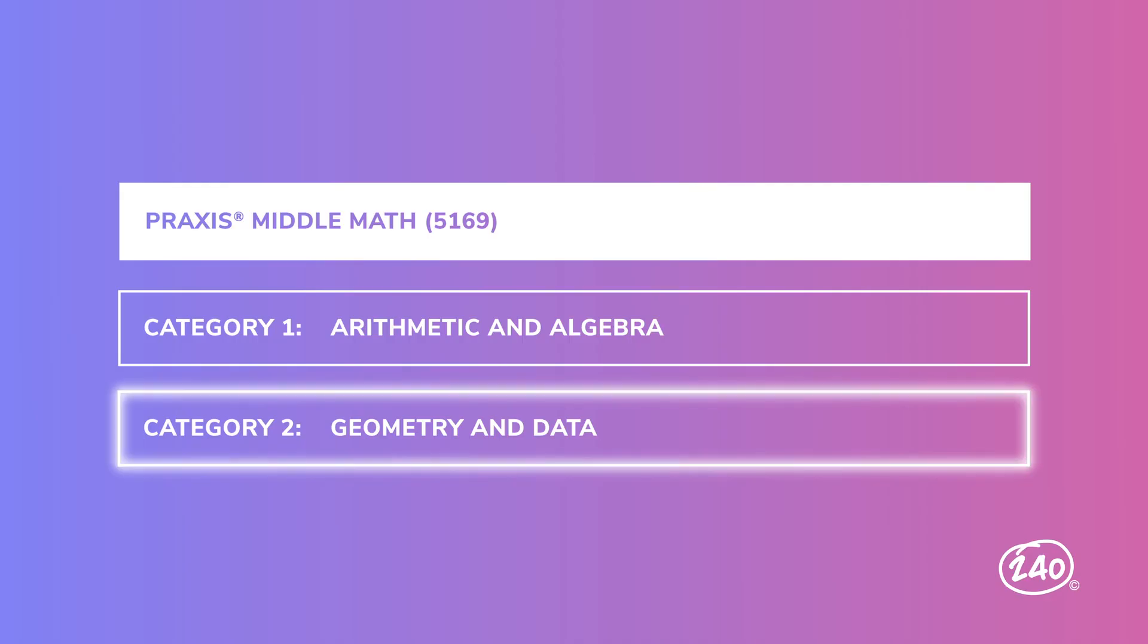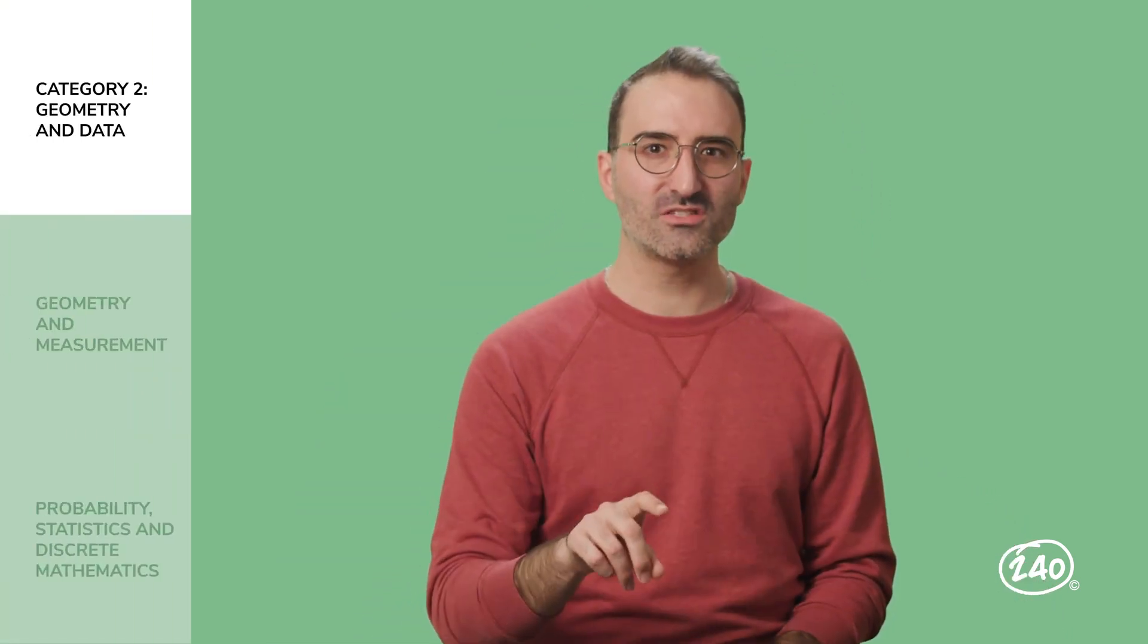The rest of your test will be made up of questions on geometry and data. What's the data on data, you ask? Geometry and data makes up 38% of the questions on your test. Let's break this part down a little further. The two sections found in this competency are geometry and measurement, so that's the geometry part, and probability and statistics in discrete mathematics.